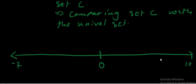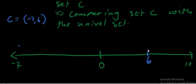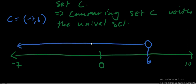We have negative 7 and 10 as part of our universal set. Indicate set C on the number line: set C is open bracket negative 7 comma 6, open bracket. Starting from negative 7 up to 6 — since 6 is not part of the answer we use an unshaded circle there. Negative 7 is part of the universal set so we end on that region of our number line. This is set C.